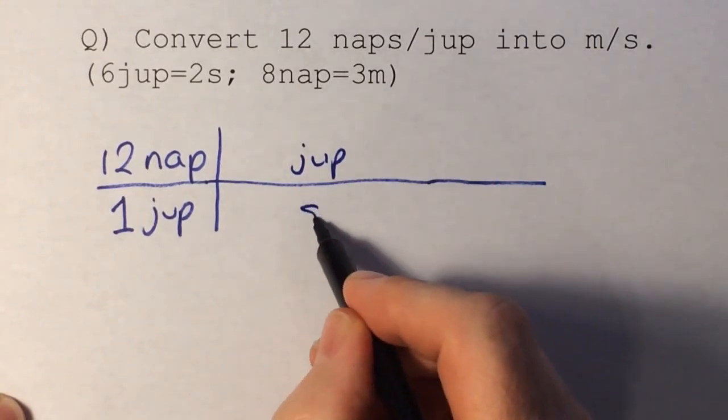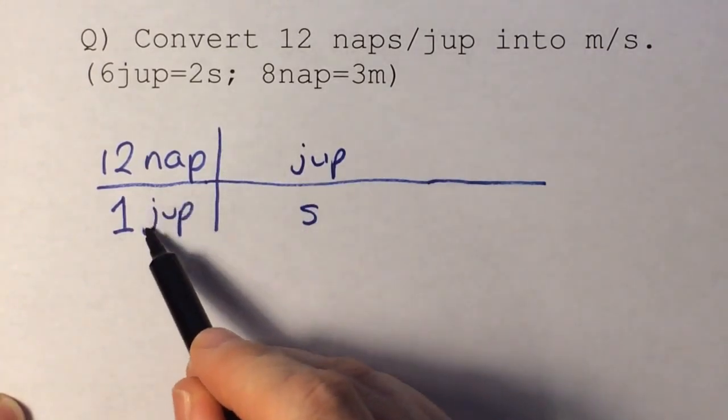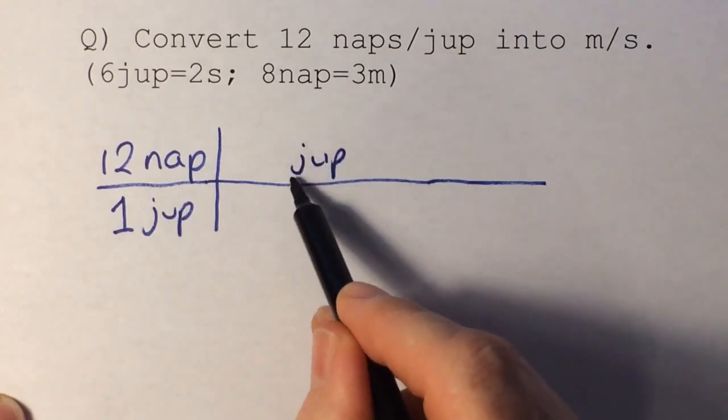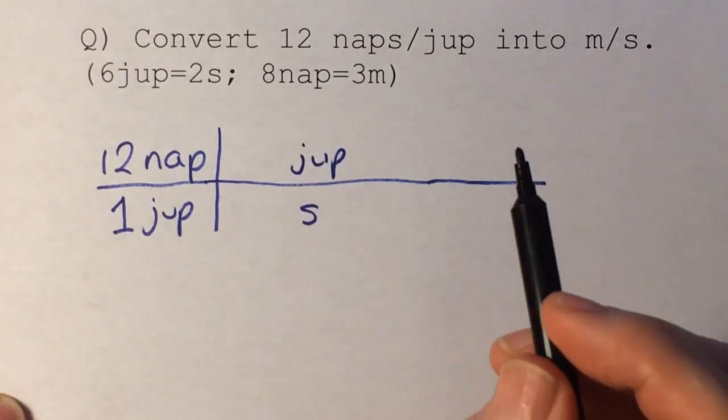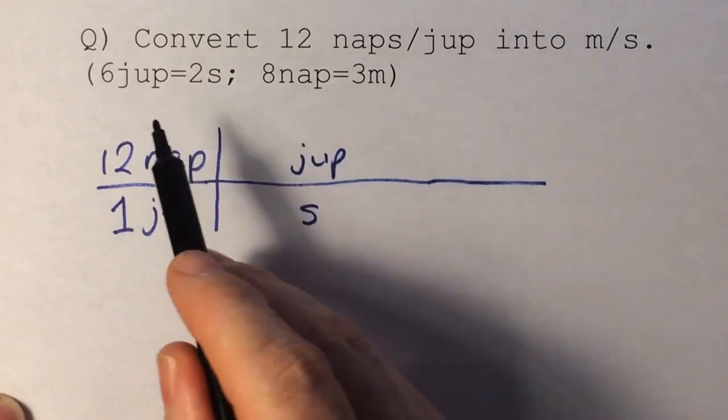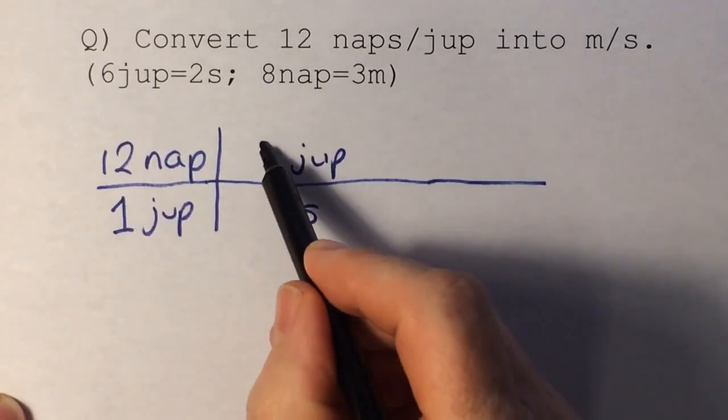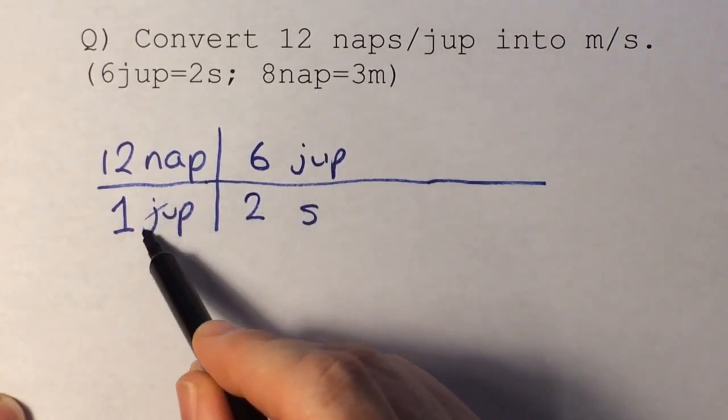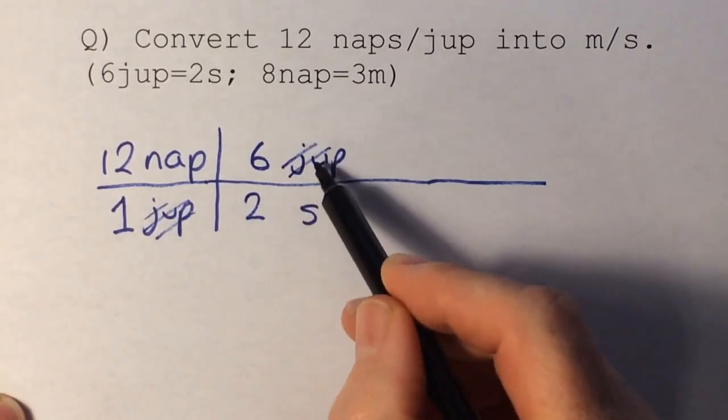That means the seconds must go on the bottom. So I had jops on the bottom, so I must put jops on the top, and if the jops go on the top, then the seconds must go on the bottom. And we have 6 jops equals 2 seconds. So I can cancel out my jops already.